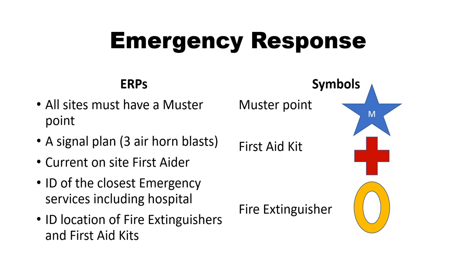All sites have an emergency response plan or ERP. All sites must have a muster point, a signal plan — which is three air horn blasts on all of our sites — a current on-site first aider, identification of the closest emergency services including hospital, and identification of the location of fire extinguishers and first aid. The muster point symbol is a giant star, the first aid kit is a red cross, and a fire extinguisher is an oval.